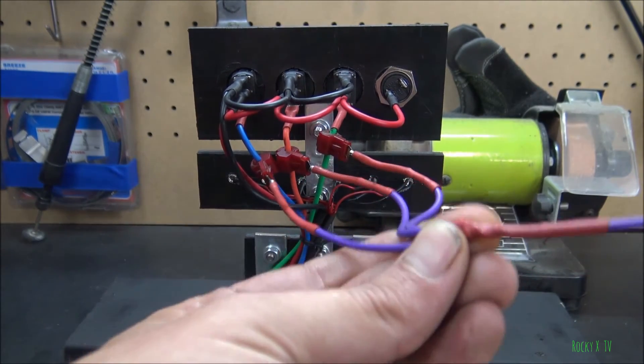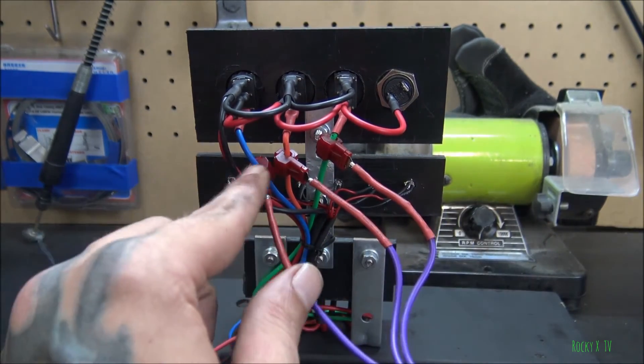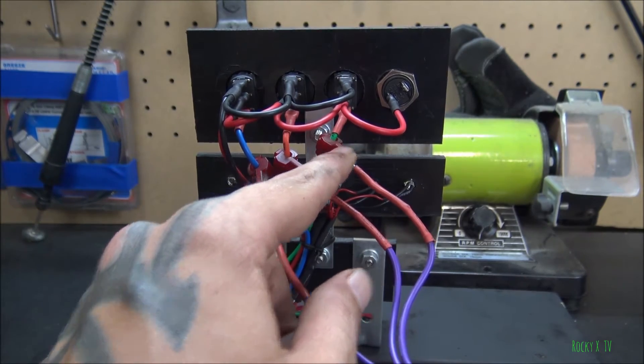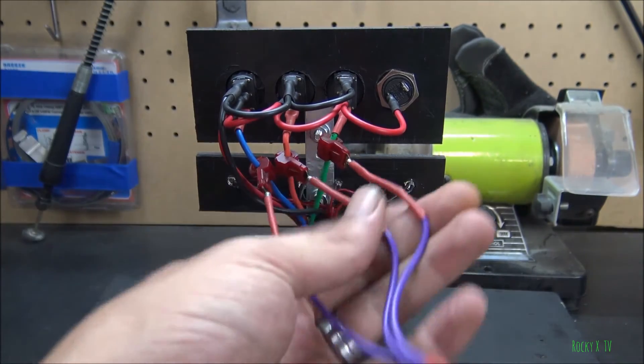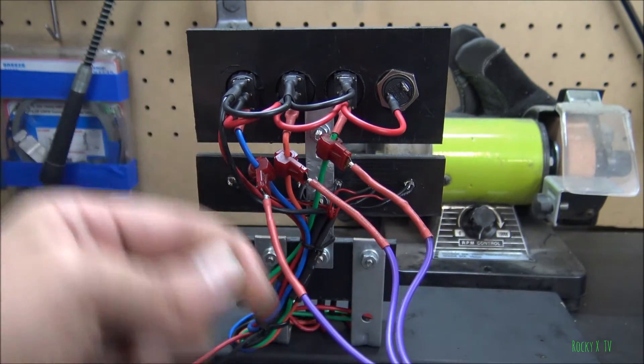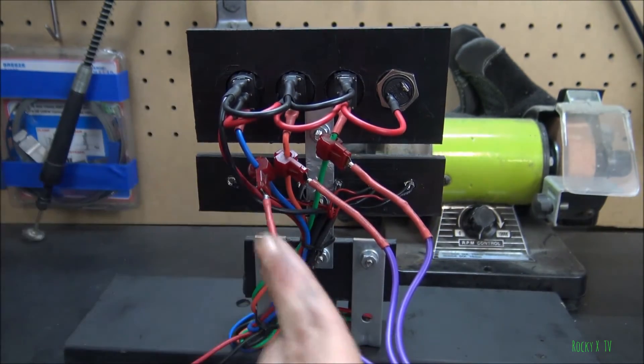Because if you notice, these are all connected together now, so that would make all three of these coil wires connected. So when you would turn on one switch, it would power all three. Well, since we have the diodes, power can't go this direction. It can only go this direction.